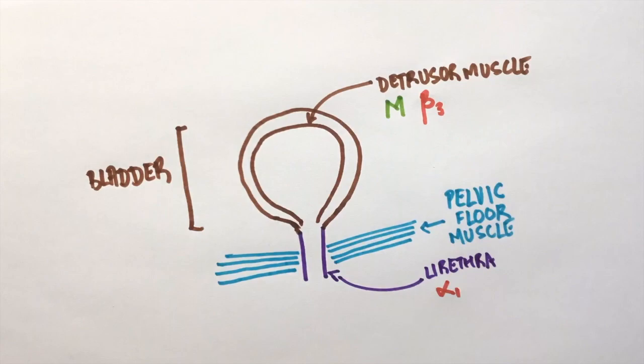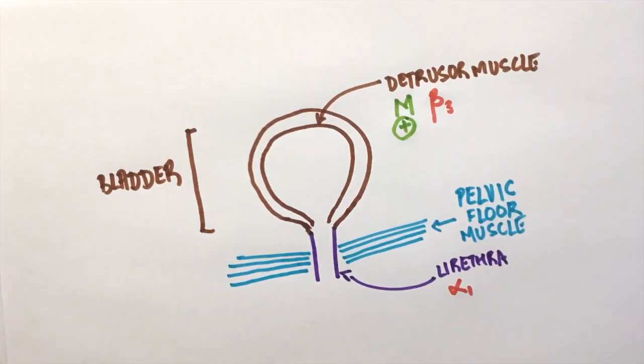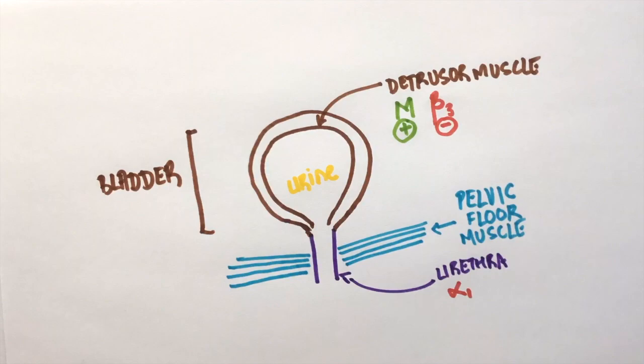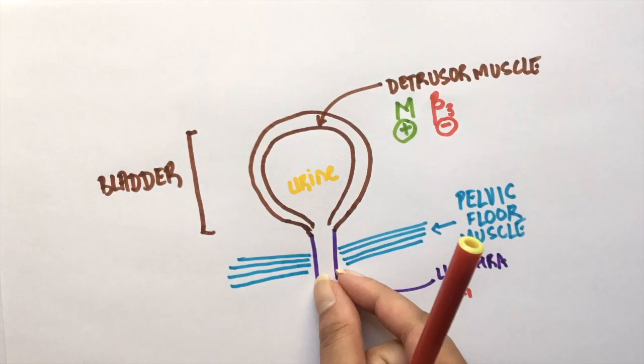Activation of the M receptors causes the bladder to contract and release urine. Activation of the beta receptors relaxes the smooth muscles of the bladder. Alpha-1 receptor activation contracts the urethra and prevents the outflow of urine.